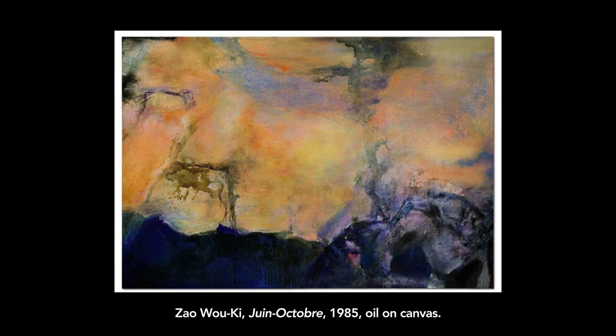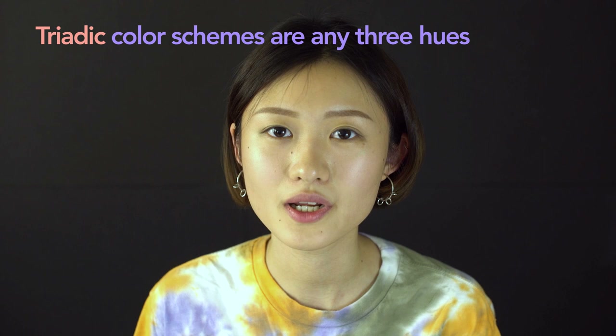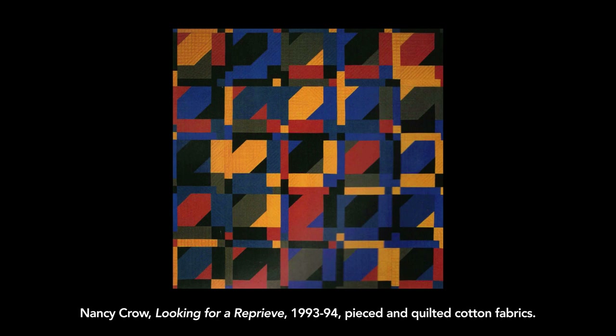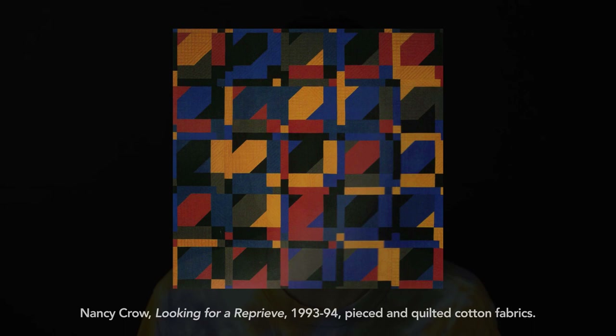Triadic color schemes are any three hues that lie equally spaced on the color wheel, or in other words, 120 degrees apart. Successful usage of the palette provides a rich, balanced, and harmonious style that the others can achieve. Here, American artist Nancy Crow's quilt demonstrates a dramatic use of the primary triad: red, yellow, and blue.